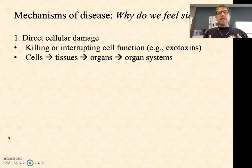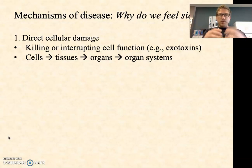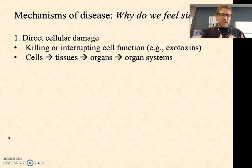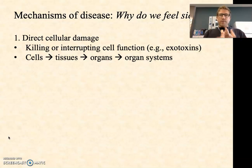Sometimes bacteria are killing cells directly or interrupting cellular function, such as with toxins — we'll talk about toxins in the next video. Remember, when cells get damaged, cells make up tissues, tissues make up organs, and organs make up organ systems. So when the cells lining the digestive tract are being ruptured by, say, a salmonella infection, the entire digestive tract is going to feel the ripple effects of that.